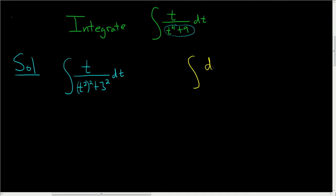So the formula that leads to arctan is the following. It's dx over a squared plus x squared. This is equal to 1 over a arctan of x over a plus c. So now it kind of matches the formula.